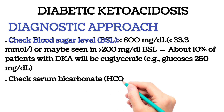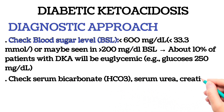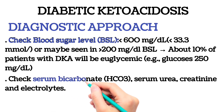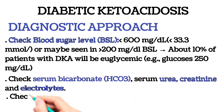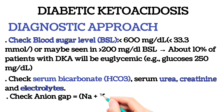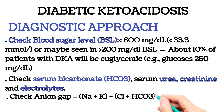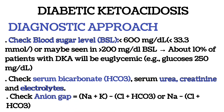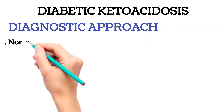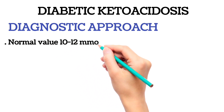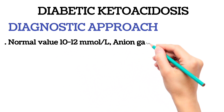Check serum bicarbonate, serum urea, creatinine, and electrolytes. Check the anion gap, calculated as sodium plus potassium minus chloride plus bicarbonate. Normal value is 12 mmol/L. The anion gap will be elevated in DKA.